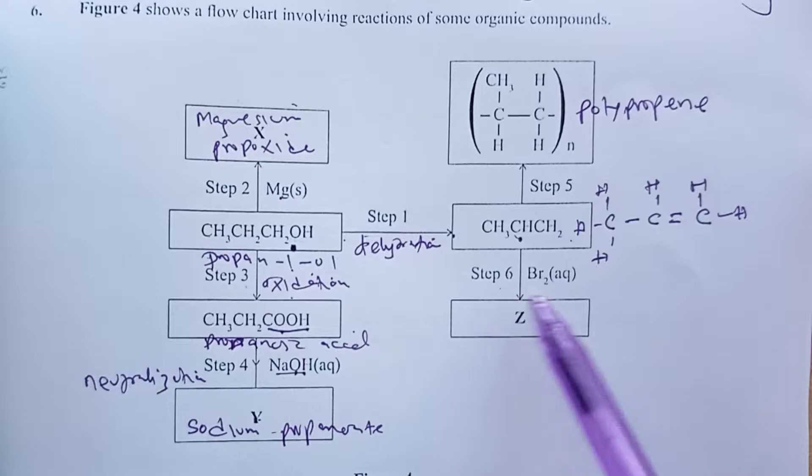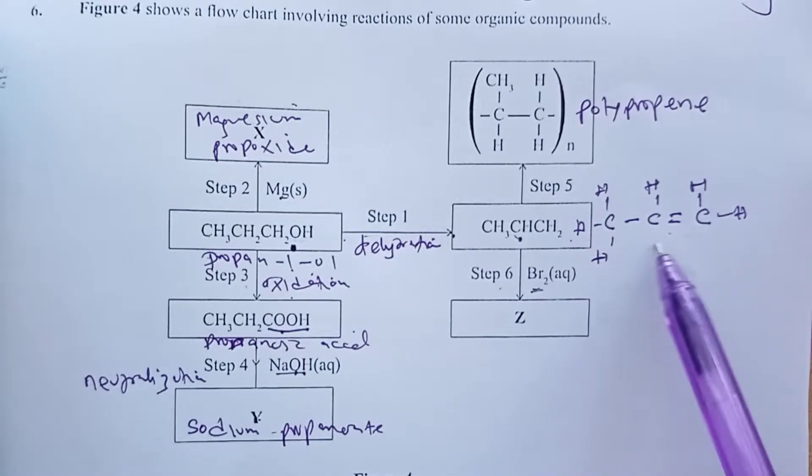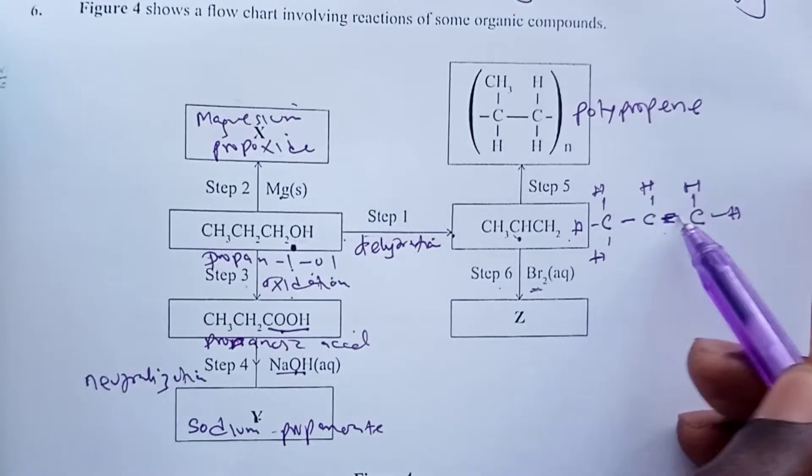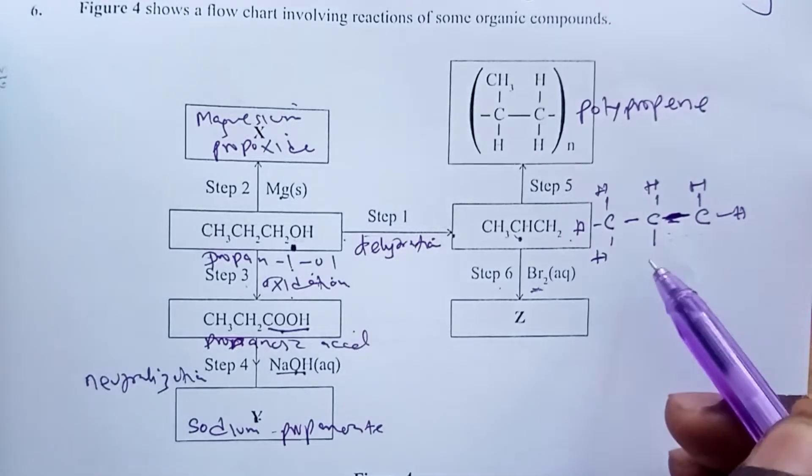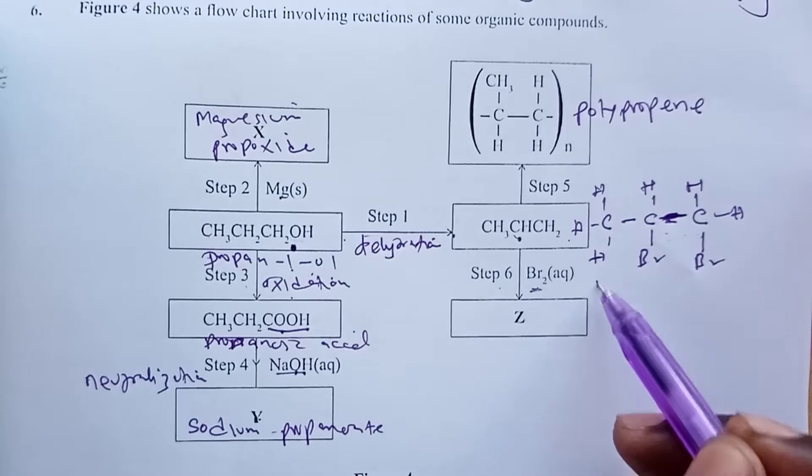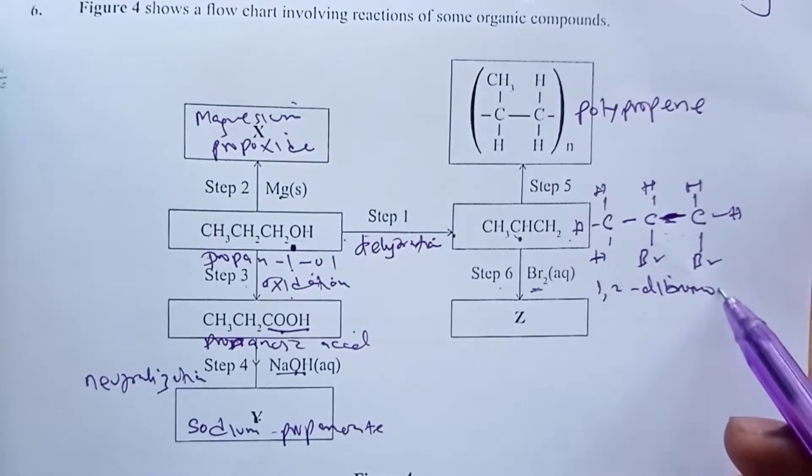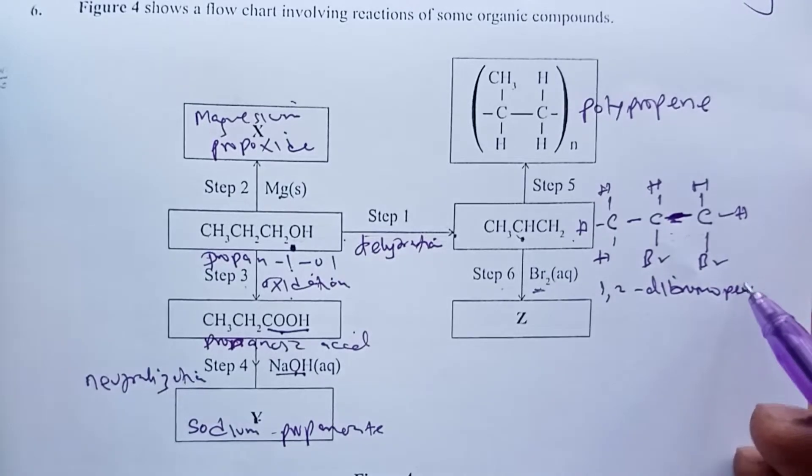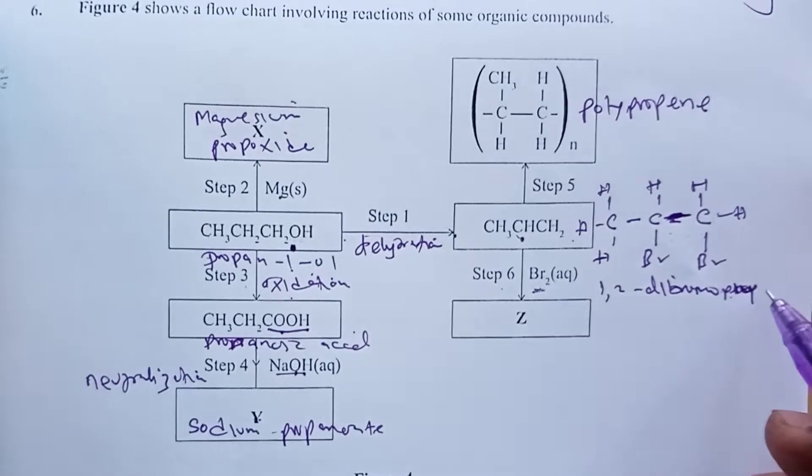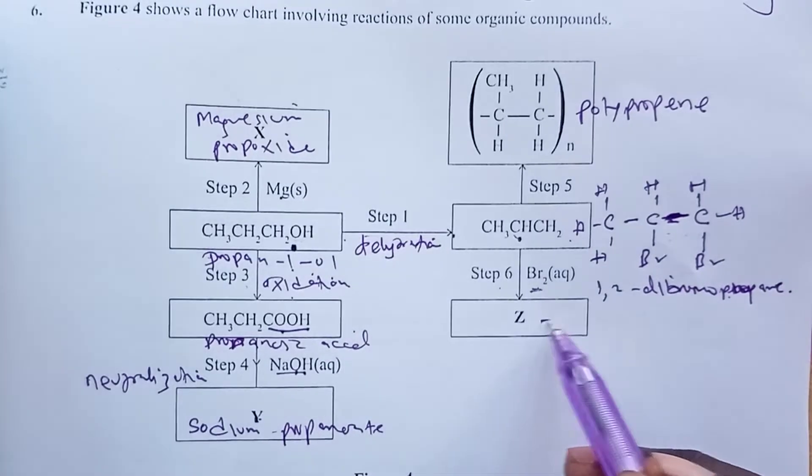Lastly, step six: we are introducing bromine to our ethene. So when you open up the double bond here, it will break, and you have one bromine attached here, another one attached there. So the name is 1,2-dibromopropane—not pentane, but propane because of the three carbons. So that becomes your Z.